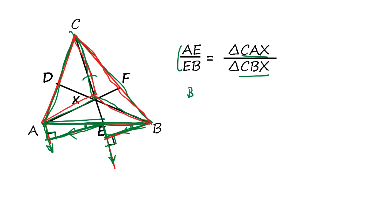Same way, BF over FC is going to be triangle CAX to triangle ABX.